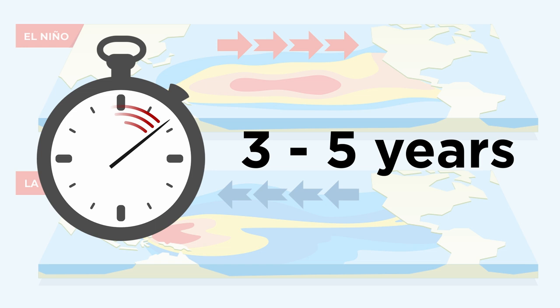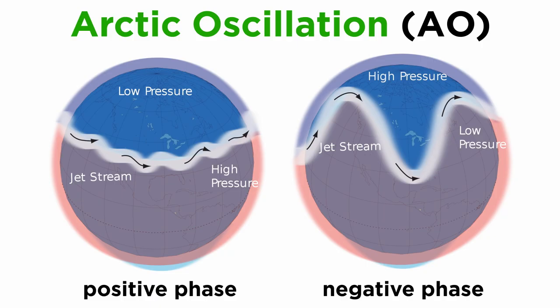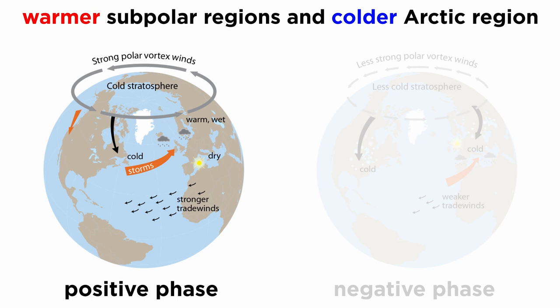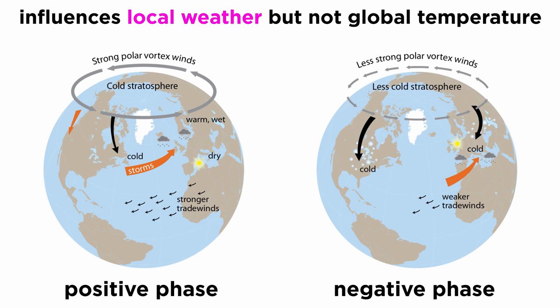Another example of internal variability is the Arctic Oscillation, or AO, which is associated with changing patterns of air pressure in the northern hemisphere. This phenomenon brings warmer weather to parts of Europe and North America, leaving the Arctic colder than usual when it's in its positive phase. The negative phase of the AO brings the opposite conditions, resulting in a warmer-than-usual Arctic and colder weather in the subpolar regions. Because of this seesaw effect, the AO has little effect on global temperatures, but can significantly influence local and regional weather, still impacting species and habitats on a large scale, including humans.